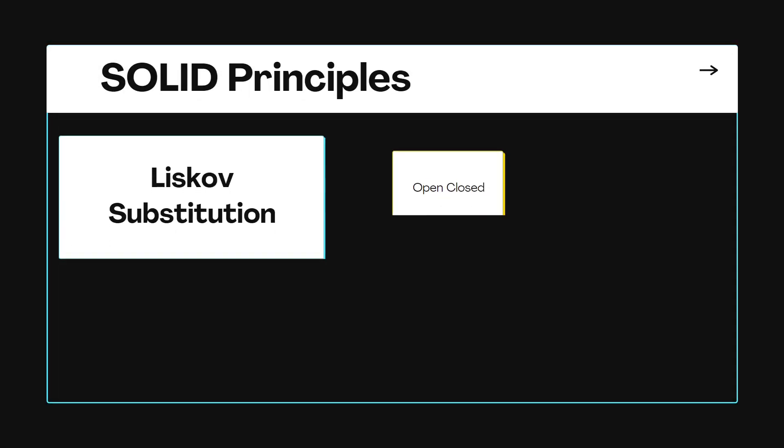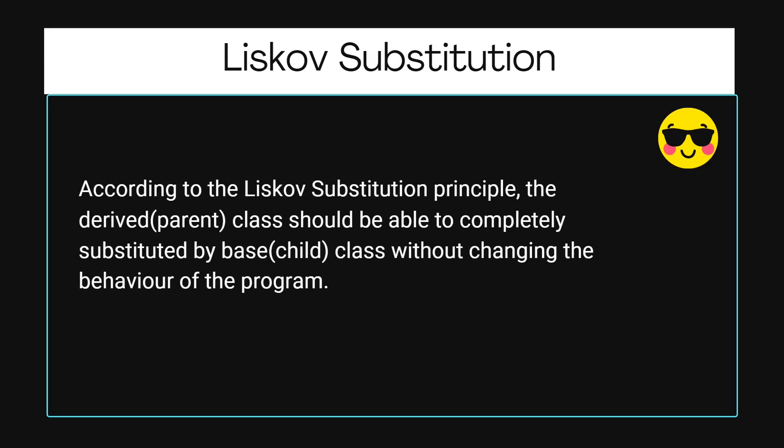The next principle is the Liskov Substitution Principle. There was a person named Liskov who provided this principle. It states that if inheritance is happening, any child class should be completely substitutable for its parent class. The derived class should be able to completely substitute the base class without changing the behavior of the program.